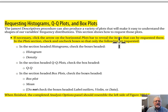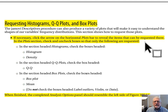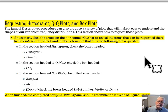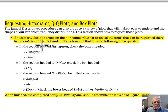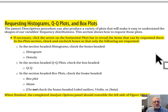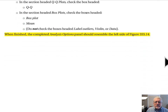Requesting histograms, QQ plots, and box plots: if necessary, click the arrow on the horizontal Plots bar to reveal the items that can be requested there. In the Plots section, check and uncheck boxes so that only the following are requested. These are the plots we want. When you're finished, your completed analysis options panel should resemble the left side of the following figure.